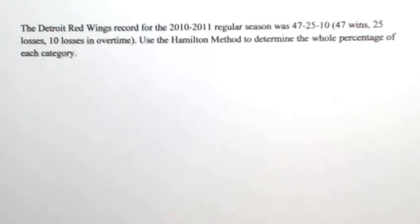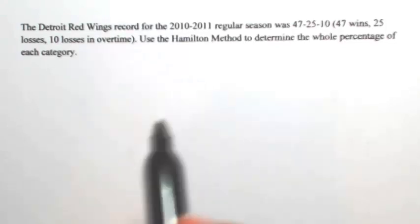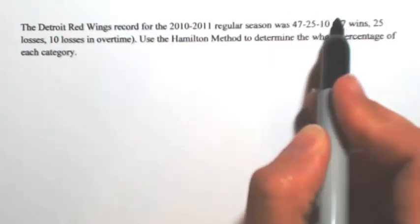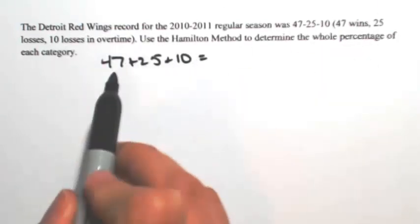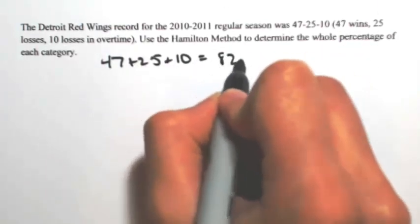So to figure out all the quotas, we need to divide each number by the total number that we have. So we're going to add up all of the games that were played. So 47 plus 25 plus 10 is going to give us 82 games.